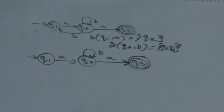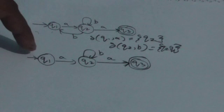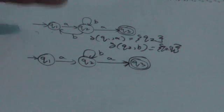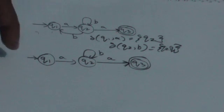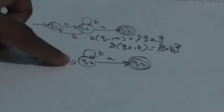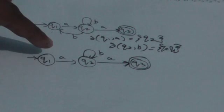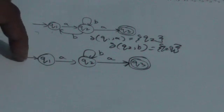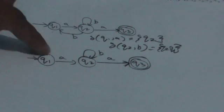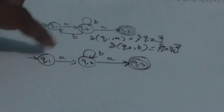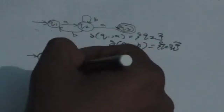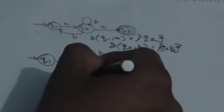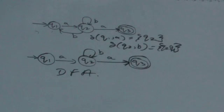Now look at this second finite automata. Here, for every state and every input symbol, there is only a single transition. It is always determined what the next state will be — there is no choice. Such automata are DFA, meaning Deterministic Finite Automata.